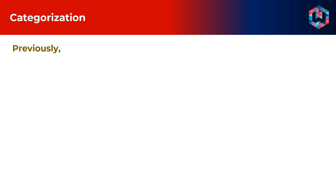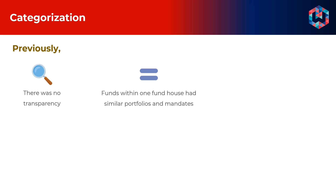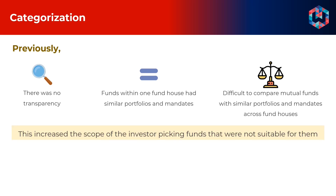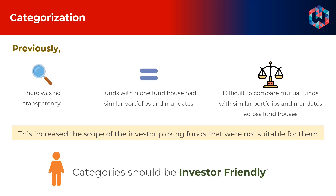Prior to 2018, mutual fund categories were very flexible. The consequence was that categories were not transparent. Within one fund house, multiple schemes had similar portfolios, and it also became difficult to compare funds within one category as their mandates across fund houses were very diverse. This made it easier for investors to choose unsuitable funds, and the ultimate purpose of categories is to be investor friendly.